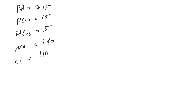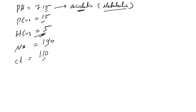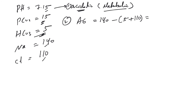The fourth example: pH 7.15, PCO2 15 mmHg, bicarb 5, sodium 140, chloride 110. Going systematically: the pH is low — this is acidemic. The primary disorder is explained by the bicarb, so this is primarily metabolic acidosis. The CO2 is clearly trying to compensate, showing that the body cannot fully compensate for pH — it's only partially compensating. Next, calculate the anion gap: 140 minus 5 plus 110 equals 25. There is increased anion gap metabolic acidosis.